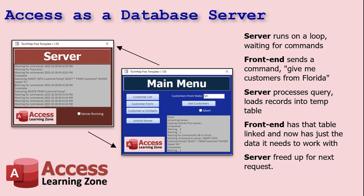Here's how it's going to work in a nutshell: you're going to have two databases running. The back-end database will be called the server and it'll just sit there waiting for commands on a loop. Your front-end is going to send the server a command like 'give me the customers from Florida.' The server receives it, prepares the data you need in a linked table, processes all that data on the back-end. Then the front-end links to that table and pulls in just those records. Then the server is freed up for the next request. You click a button, get the customers from New York, the server processes that, and the front-end database can now just access those records.